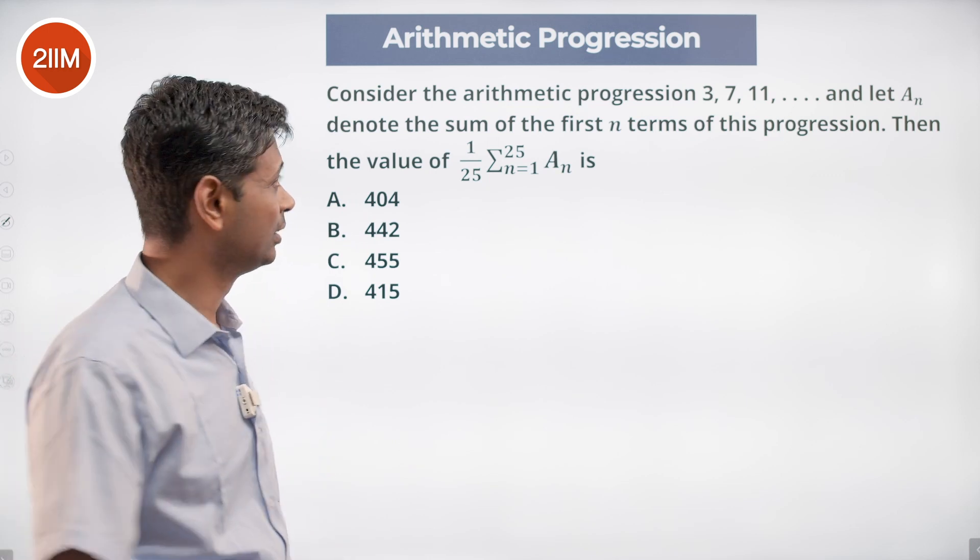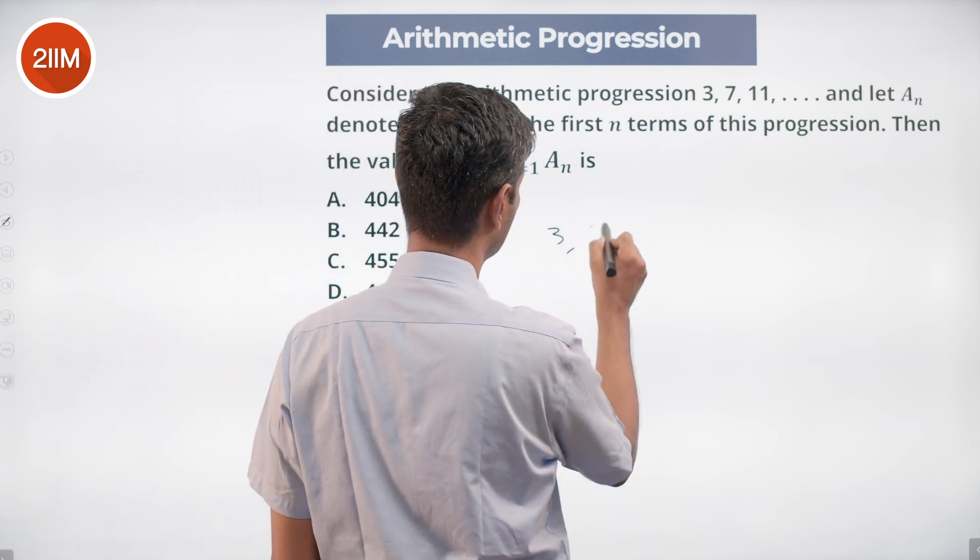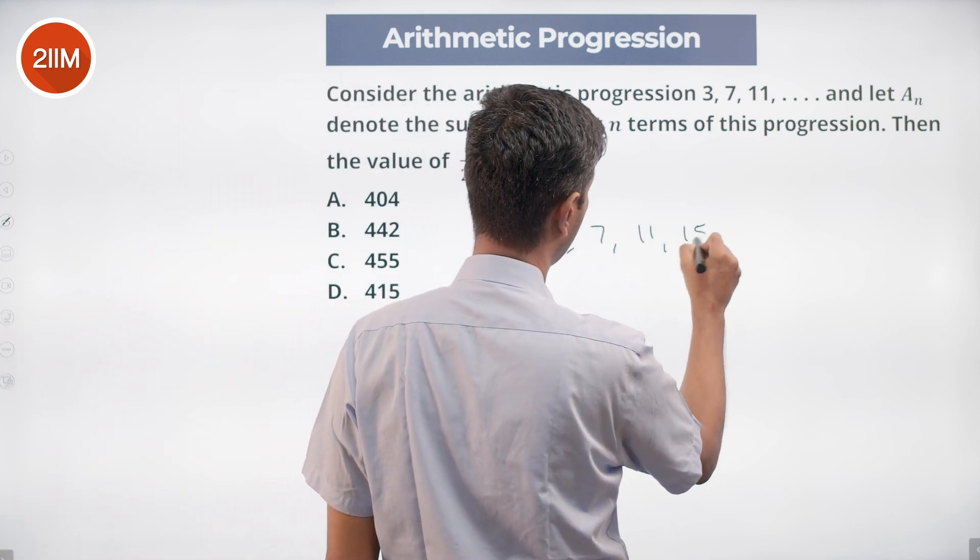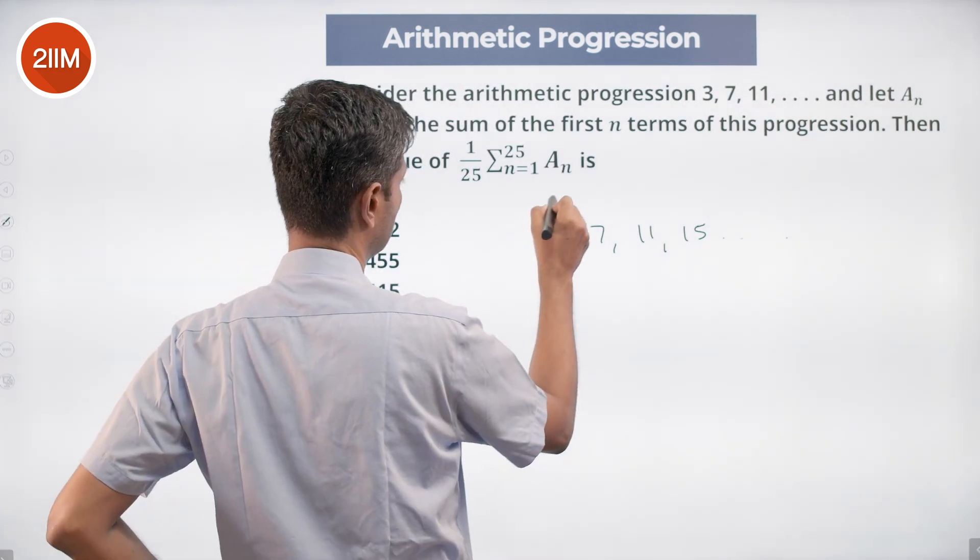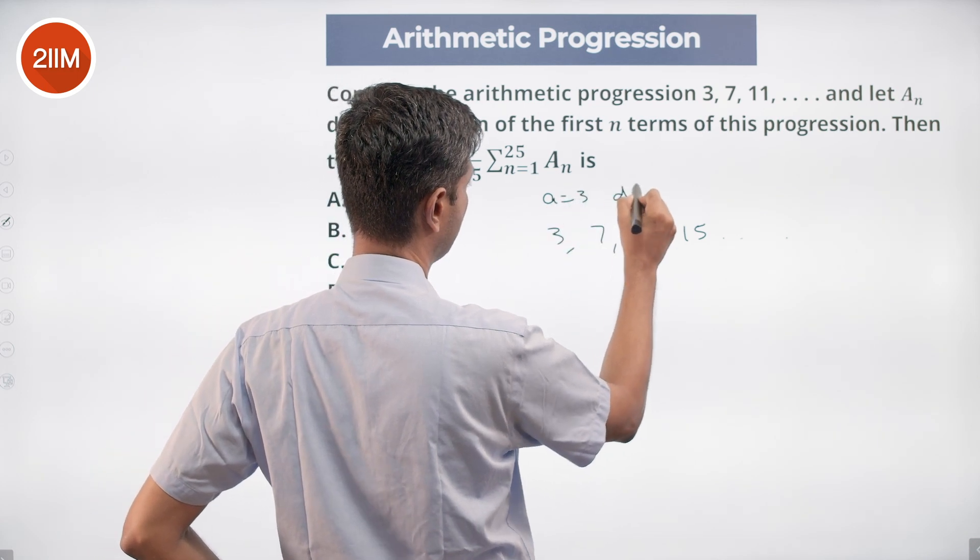We will do the brute force method. So the progression is 3, 7, 11, 15. First term is 3, common difference is 4.